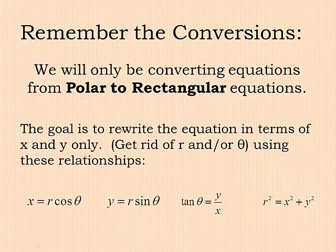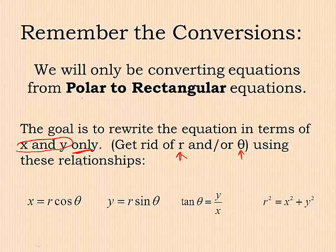If we're going polar to rectangular, the goal is to rewrite the equation in terms of x and y only. In essence, we're getting rid of r and getting rid of theta. Sometimes you have to get rid of both, sometimes it's one or the other. But you know you're finished when you have your equation in x and y terms.